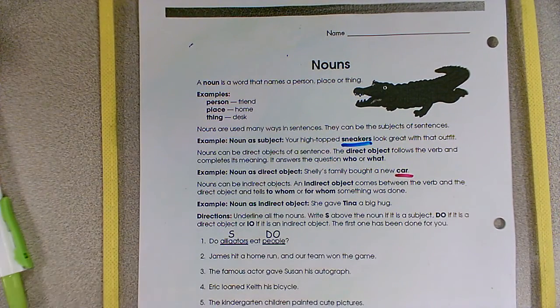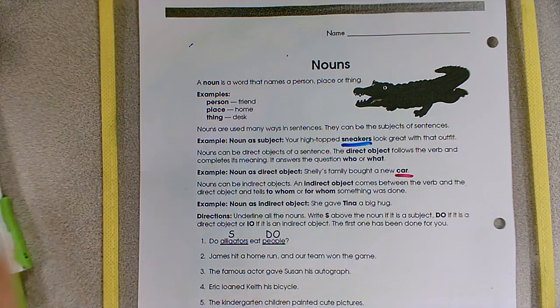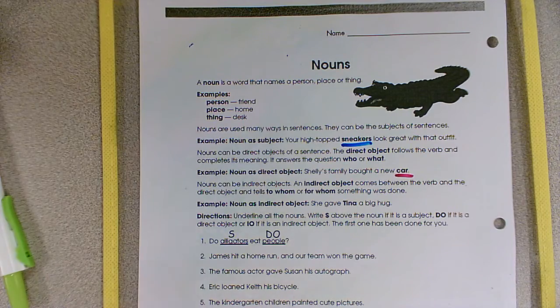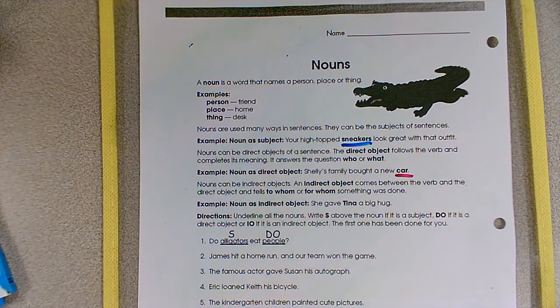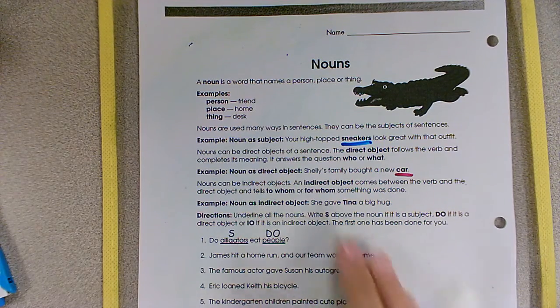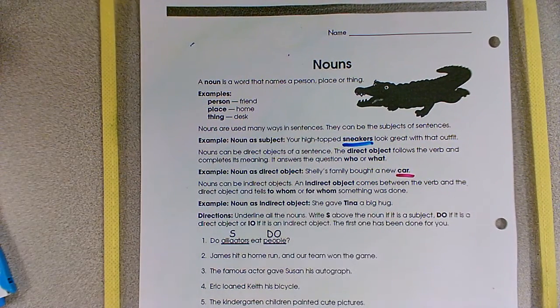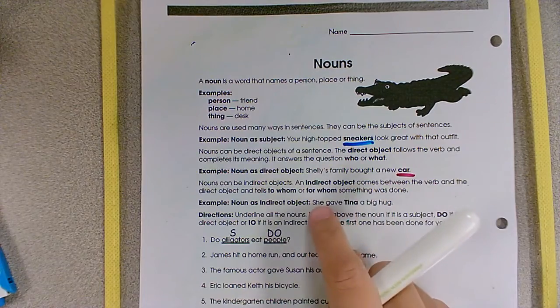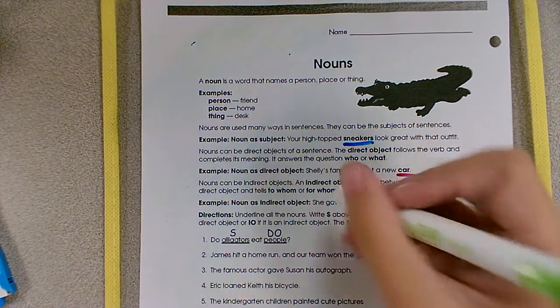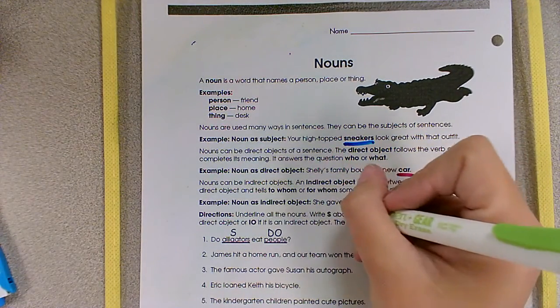Next, we have indirect objects. Indirect objects can be a little bit tricky. The indirect objects come between the verb and the direct object and tell to whom or for whom something was done. For example, she gave Tina a big hug. Tina is our indirect object.